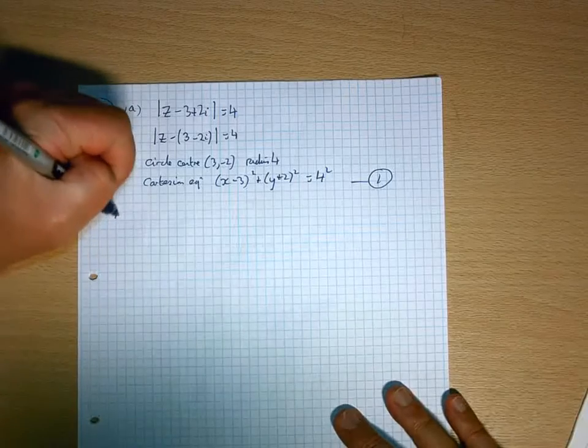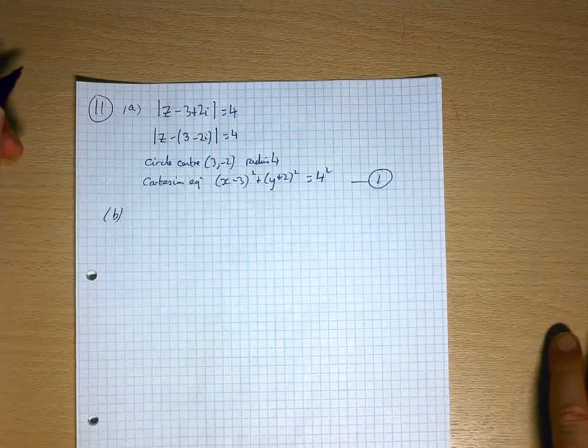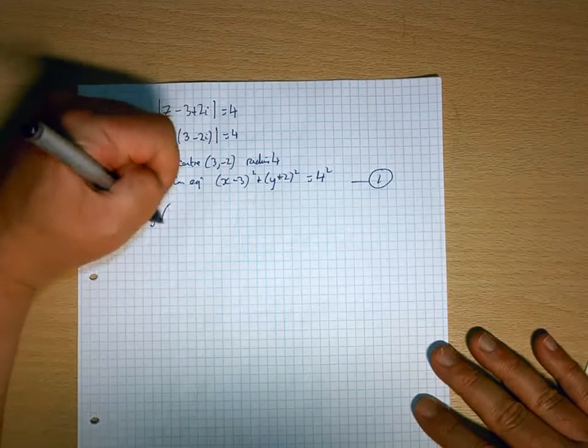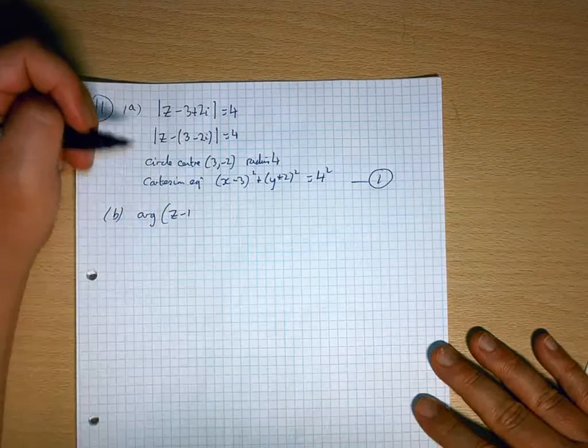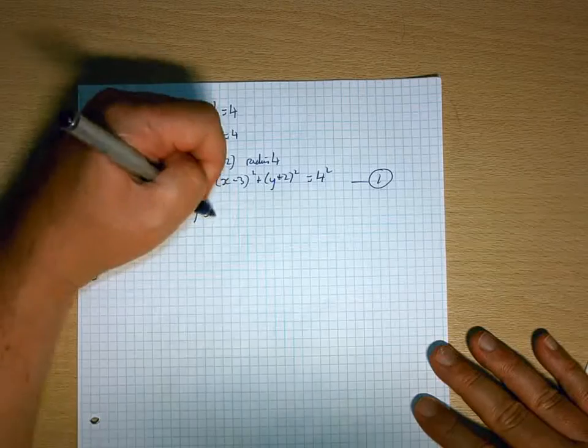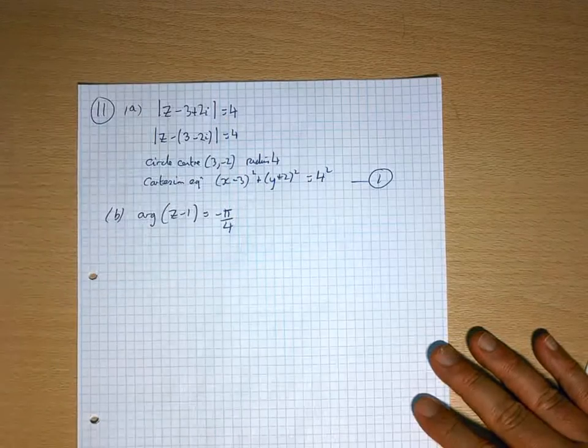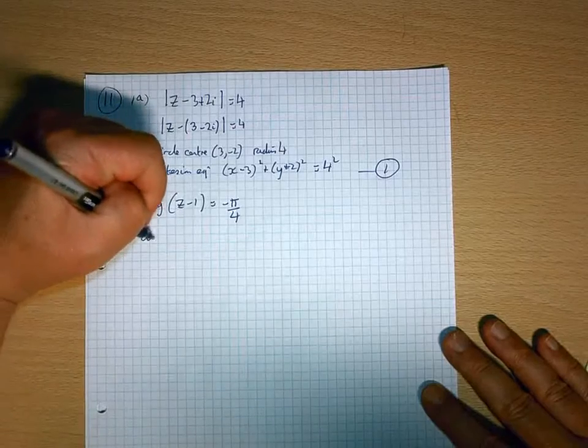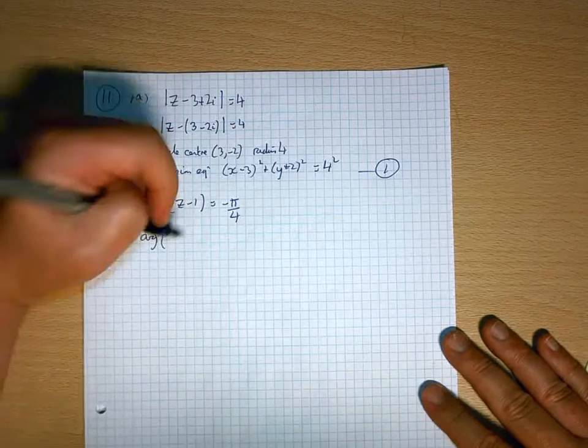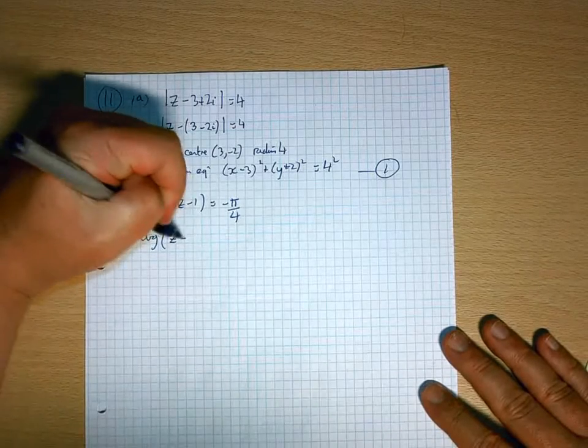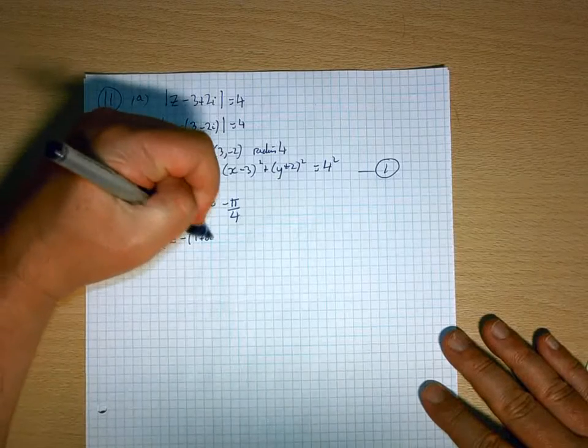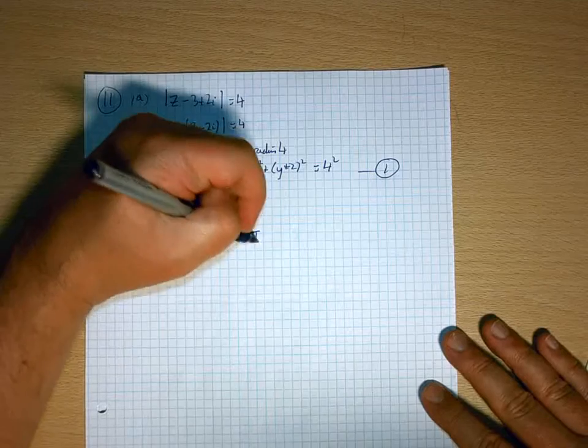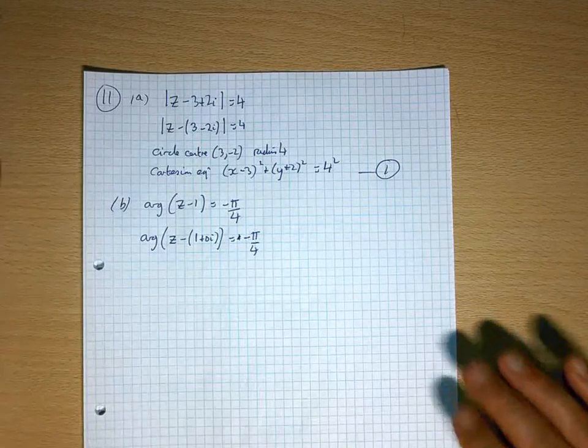Then, second locus is arg z minus 1 equals minus pi by 4. Arg of z minus 1 plus 0i equals minus pi by 4.